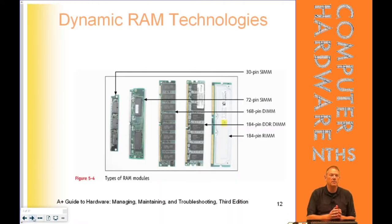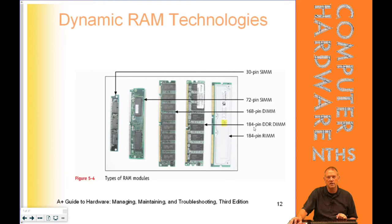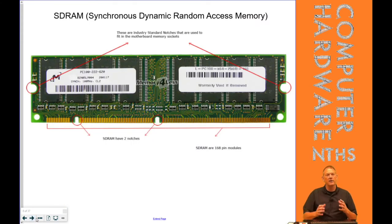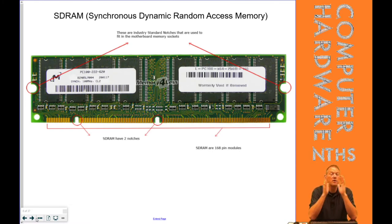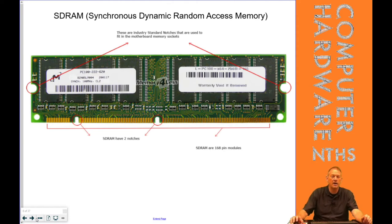Dynamic RAM went through a bunch of changes, evolving from different kinds of single inline memory modules — which is what SIM stands for — that we had originally, into the dual inline memory modules we have today. As we did that, we got what in modern memory was synchronous dynamic random access memory, or SDRAM. SDRAM is still what we have today, although it's evolved and we don't call it SDRAM anymore. It synchronizes with the motherboard speed, and information gets transferred to memory in relation to how fast the motherboard is running.